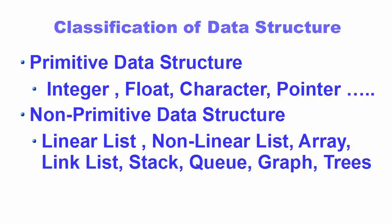Non-primitive data structures are more sophisticated and are derived from the primitive data structures. They emphasize structuring groups of homogeneous — meaning the same type — or heterogeneous — meaning different types — of data items. Examples of non-primitive data structures include lists, stacks, queues, trees, and graphs. This was a brief introduction to data structures and algorithms. In the later videos we'll cover detailed information about different types of data structures and algorithms, so stay tuned.